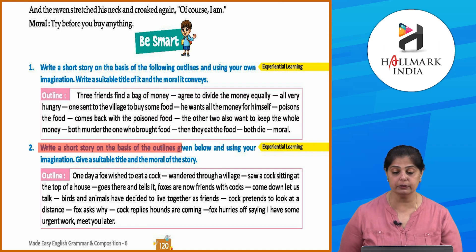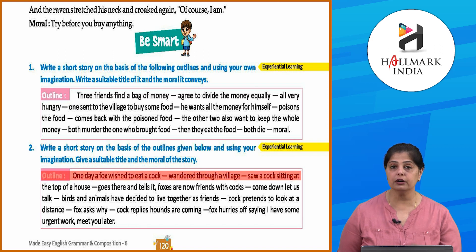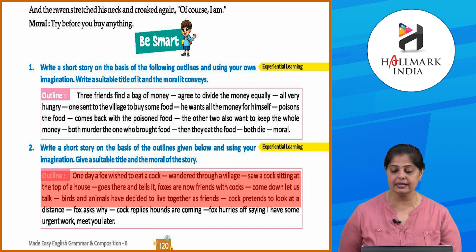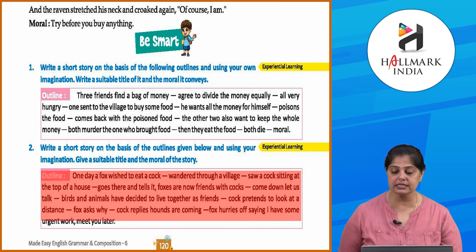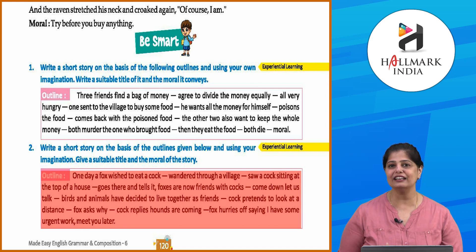Outline two: One day a fox wished to eat a cock and wandered through a village. A cock was sitting at the top of a house. The fox goes there and tells the cock that foxes are now friends with cocks — 'Come down, let us talk. Birds and animals have decided to live together as friends.' The cock pretends to look at a distance. The fox asks why. The cock replies, 'Hounds are coming.' The fox hurries off saying, 'I have some urgent work, meet you later.' Both stories are pretty interesting! Quickly grab your notebooks, pens, and pencils and start writing these beautiful stories.